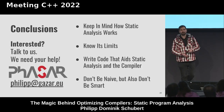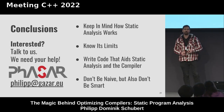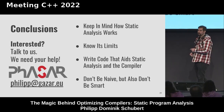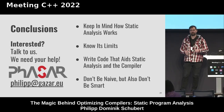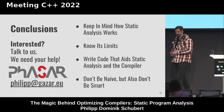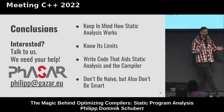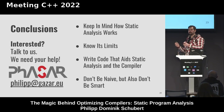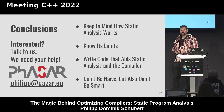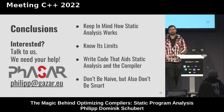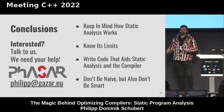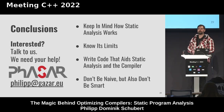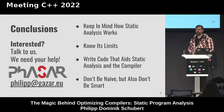To conclude: keep in mind how static analysis works, know its limits, know what it can compute, and know the things it has trouble with — so you can write code that aids the static analysis and the compiler to produce optimal code. Don't be naive, but also don't be smart — somewhere in the middle is good. If you're interested in static analysis, check out the Phaser project on GitHub or drop me an email. We implement concepts too expensive to be put into the compiler and could really use your help.